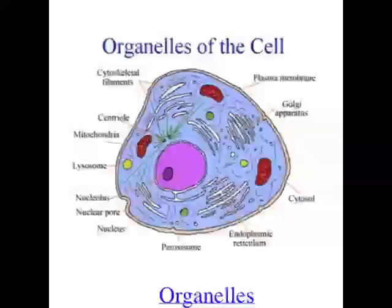Another organelle is the Golgi apparatus, which is involved in packaging proteins into little vesicles that can then be transported around the organism or out of the cell. Another organelle is a lysosome — membrane-bound vesicles which contain powerful digestive enzymes, responsible for breaking down wastes, debris, and foreign material in the cell. There's also a vacuole, which is a liquid-filled organelle. Plant cells in particular have really big ones filled with sap.